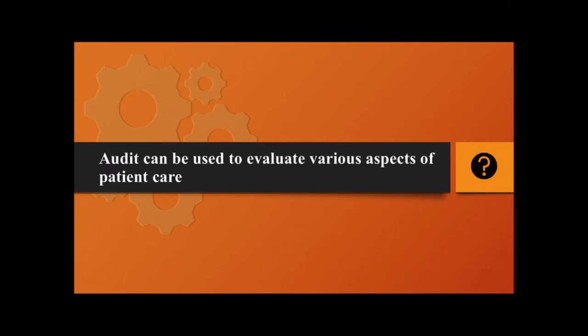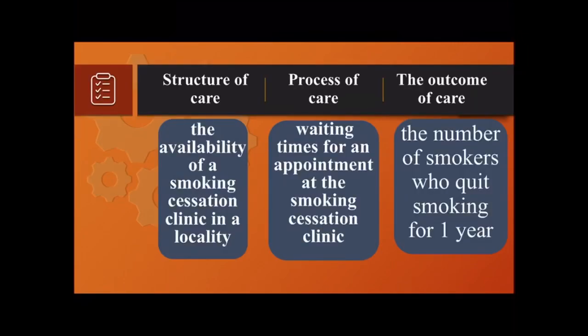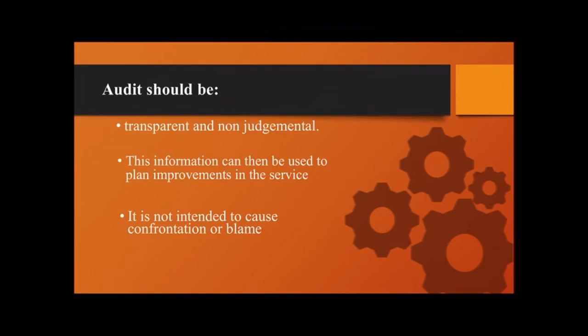Audit can be used to evaluate various aspects of patient care, like structure of care, process of care, and outcome of care. An example of structure of care is the availability of a smoking cessation clinic in a locality. For process of care, it could be waiting times for an appointment at the smoking cessation clinic. For outcome of care, it could be the number of smokers who quit smoking for one year. Audit should be transparent and non-judgmental, and this information can be used to plan improvement in the service. It isn't intended to cause confrontation or blame.